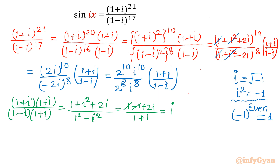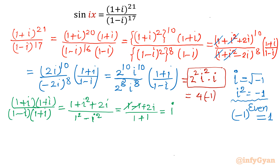So (1+i)/(1-i) simplifies directly to i. Now for our final RHS value: after canceling powers, 2^10 over 2^8 leaves 2² = 4, and i^10 over i^8 leaves i². So the value is 4 times i² times i. Since i² = -1, this gives us 4 times (-1) times i. Therefore, our right-hand side value is minus 4i.